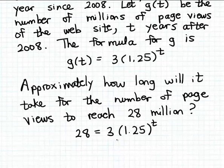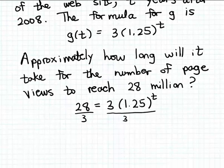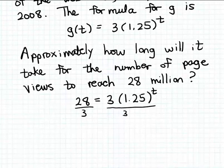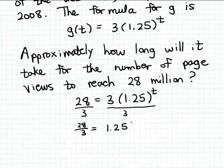First I need to simplify this equation. I'm going to divide both sides by 3 to eliminate the coefficient 3 from the right-hand side of the equation. So we get 28 over 3 equals 1.25 to the T power.